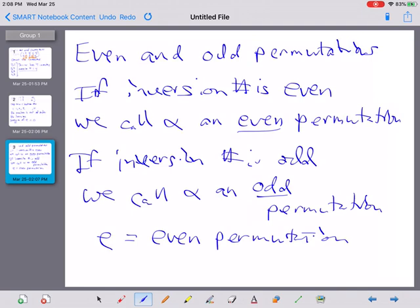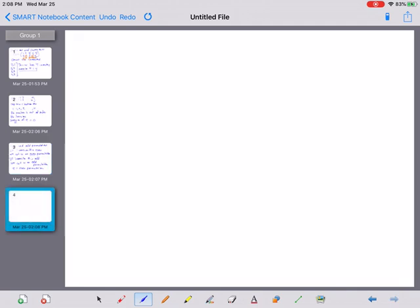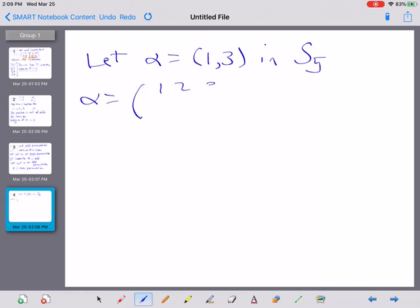Well, I want to end with looking at the inversion number of a particular cycle. So let's just look at that for just a minute. Let's let, actually, I want to do for just a transposition. Let's let alpha be something like 1 goes to 3 inside S5. So alpha's two-row notation would look like this.